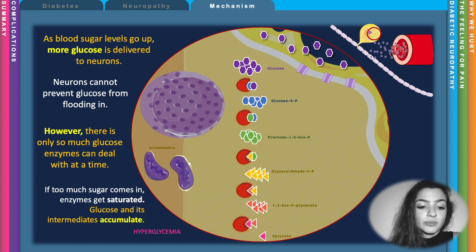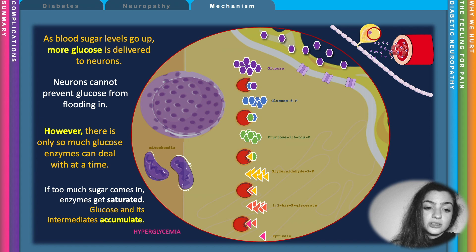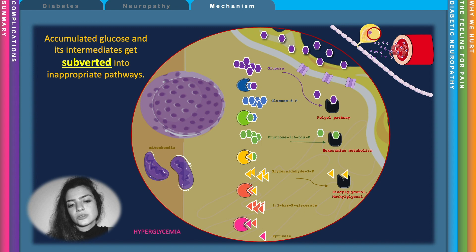What happens is these enzymes become saturated. They are working as hard as they can but cannot meet the demand for glucose metabolism, so these metabolic intermediates start to accumulate.